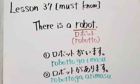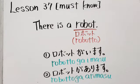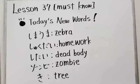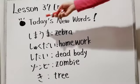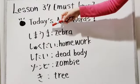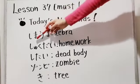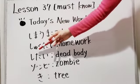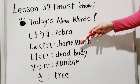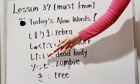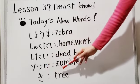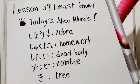Actually, the が particle has another function. Let's learn that in lesson 38. Today's new words: シマウマ (zebra), 宿題 (homework), 死体 (dead body), ゾンビ (zombie), 木 (tree).